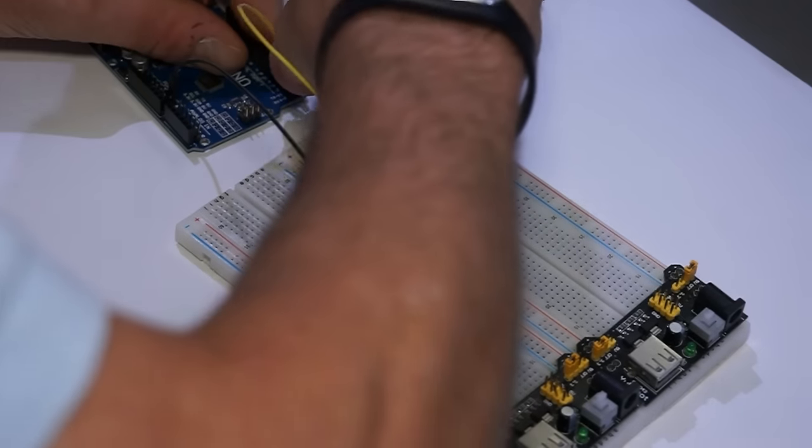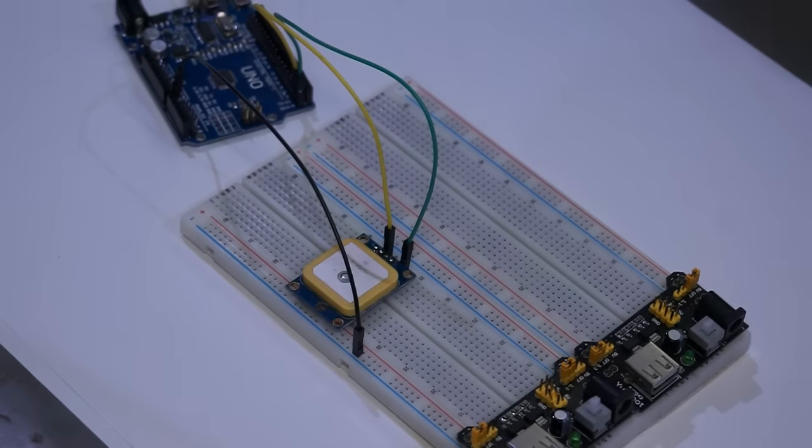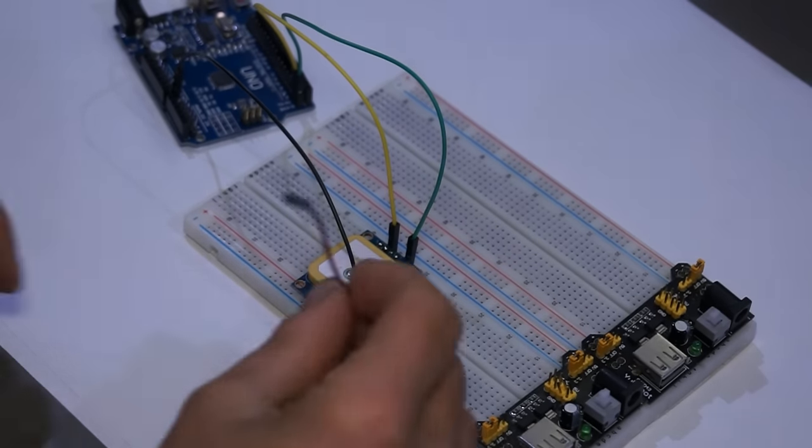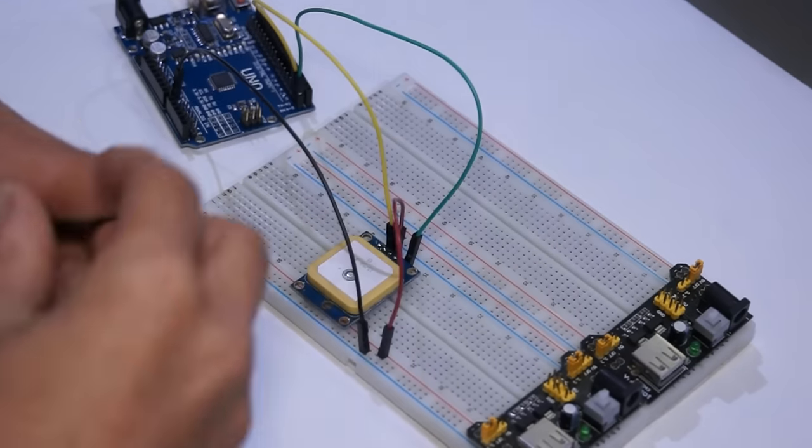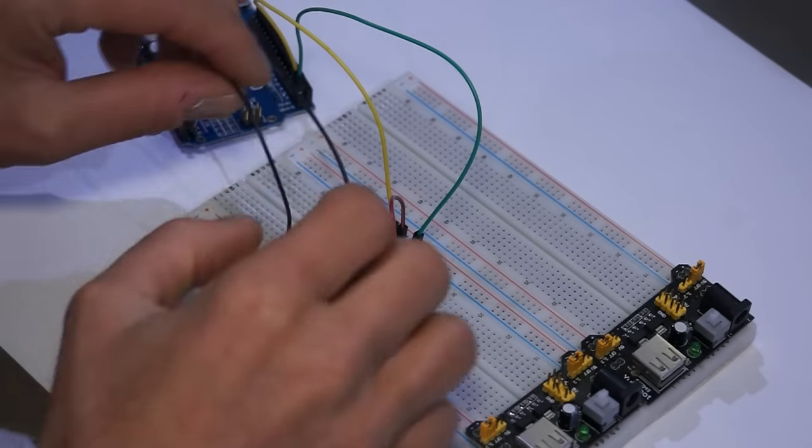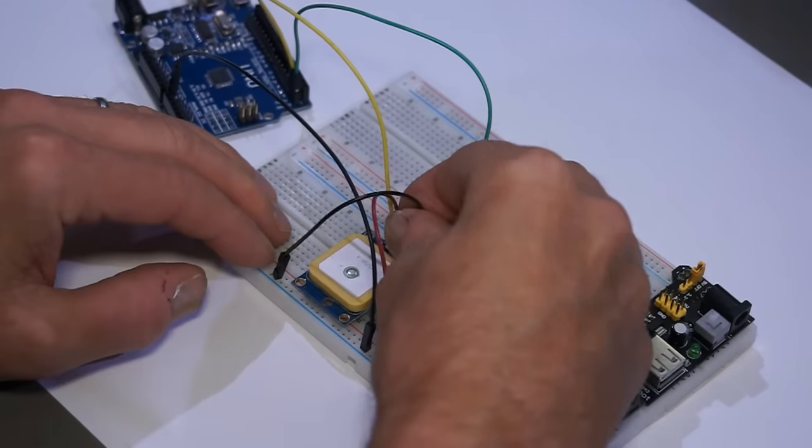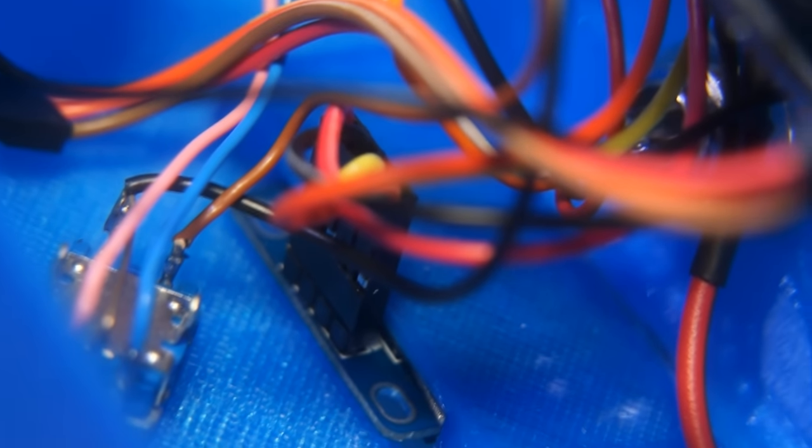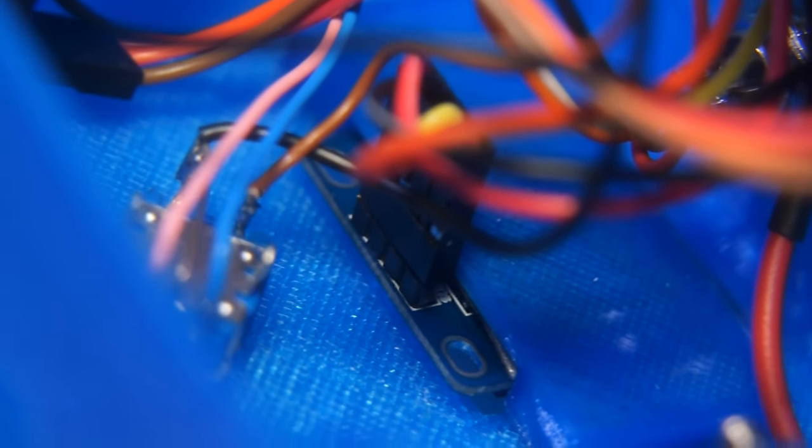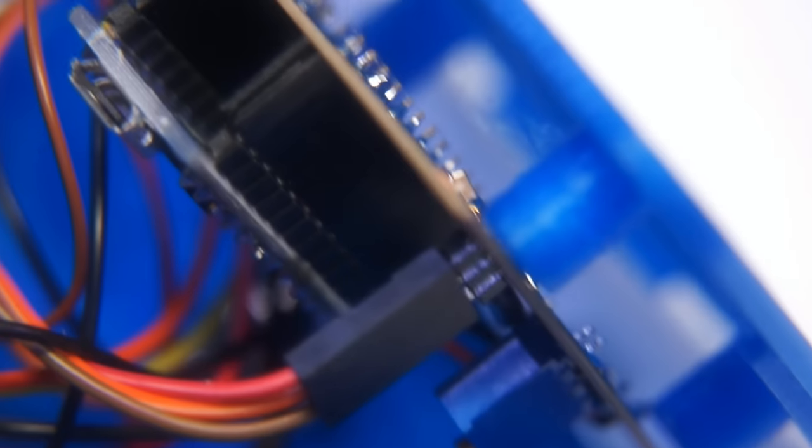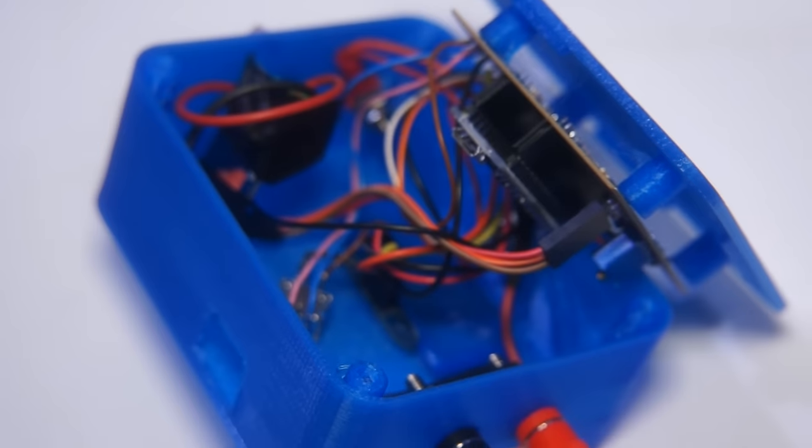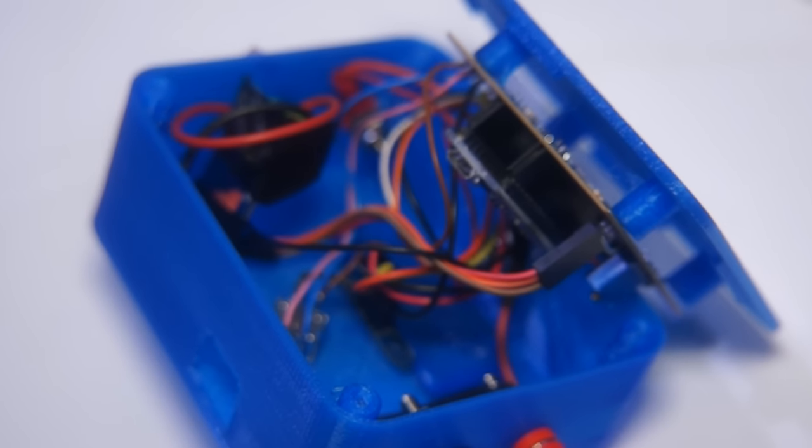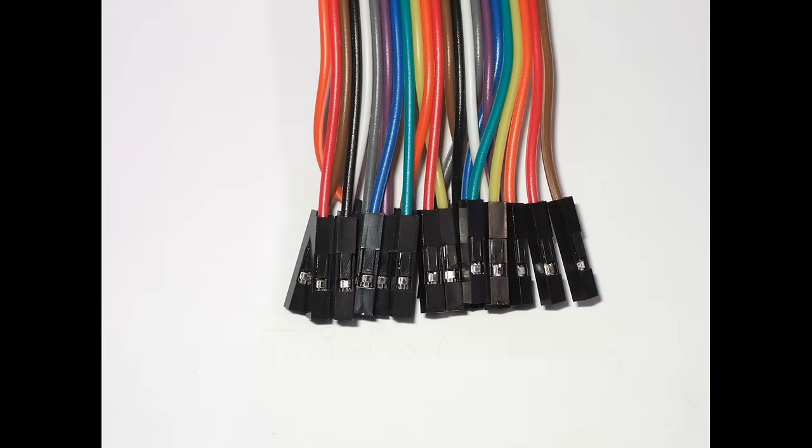This is where the 20 or 30 centimeter wires come in. For connections on the breadboard itself, or if I have to connect pins on a module, the 10 centimeter wires are perfect. They are also good if I build a permanent project which I want to put into a box. 20 or 30 centimeter wires just would be too long.